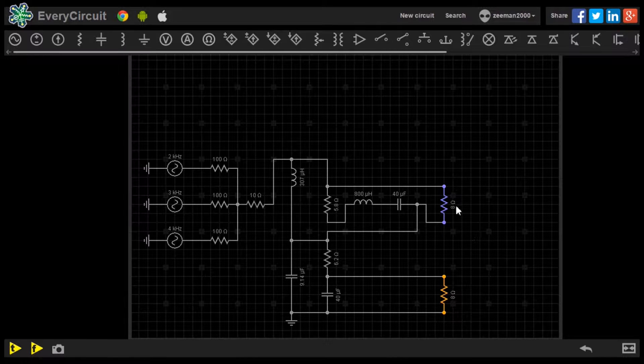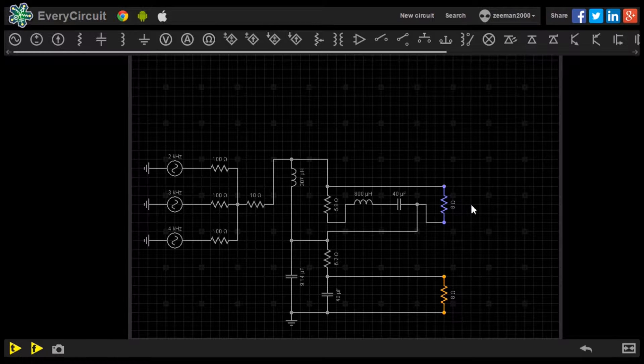The top speaker is the tweeter, used to receive signals between 2kHz and 4kHz. The lower speaker is the woofer, used to output signals at a range between 60Hz and 250Hz.